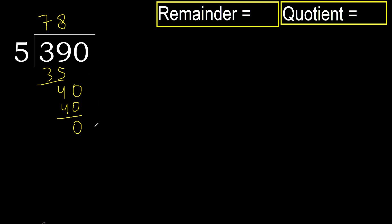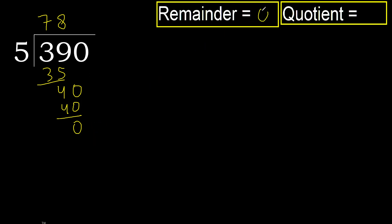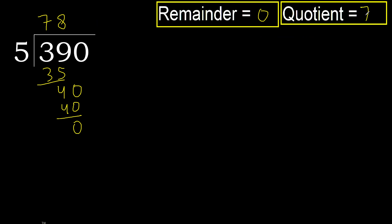That is not a number, therefore finish it. 0. Ok, 390 divided by 5 is here. Ok.